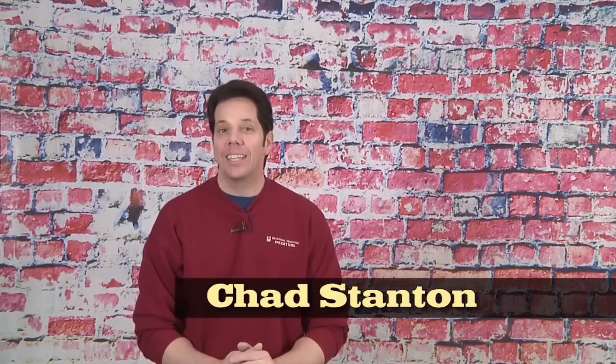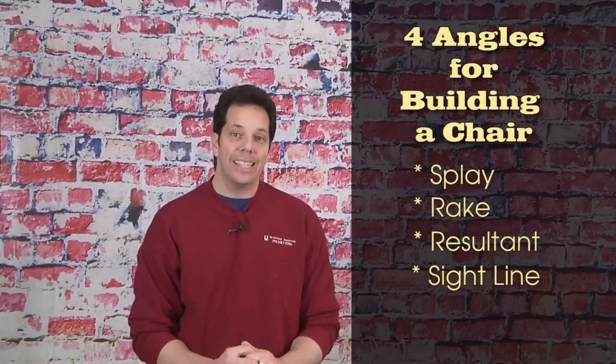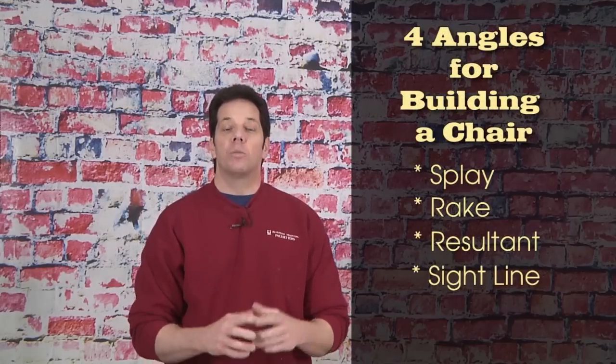Hello, fellow wood choppers, Chad here, and yes, this is part two of Woodworking Angles, Building a Chair. In the first video, you learned about the four different angles: splay, rake, resultant line, and sight line angles. And we used a little bit of geometry to figure them all out. Now, on this episode, I'm going to show you how to take those measurements, those angles, and lay them out on your workpiece to drill that hole. And it has to be precise. I'm going to show you two different methods to do that. One will be in the drill press, and the other is with a homemade jig.